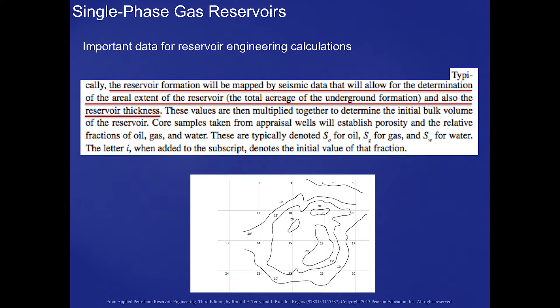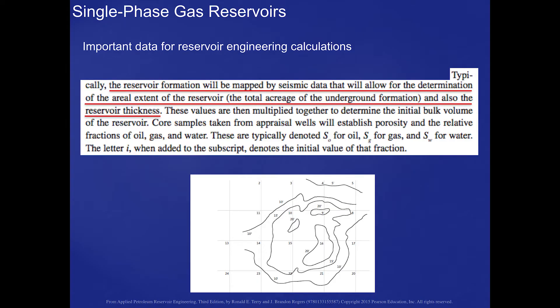Some of the important data that we need as reservoir engineers to make calculations are shown in this slide. One of the first things we'll do is try to map the reservoir with seismic data, which we talked about in a previous lecture. Getting the seismic data will allow us to map out the extent of the reservoir, the boundaries, and also the thickness in various locations, as shown on this slide — a fairly typical diagram generated from seismic information. Once we have the aerial extent and the thickness, we simply multiply those values together to give us an initial estimate of the bulk volume of the reservoir.